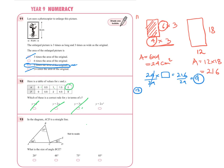It looks like the last option. Let's verify with two values. When x equals two: y equals two times two squared, which is two times four, equals eight — correct. When x equals one: y equals two times one squared, which is two — and that matches the table. So the rule is y equals 2x².